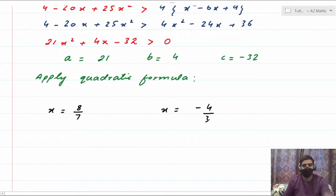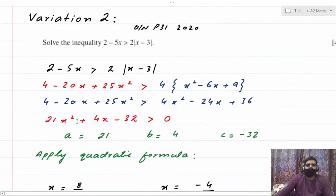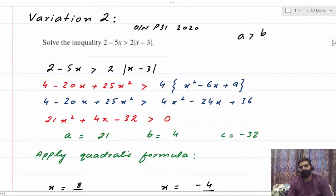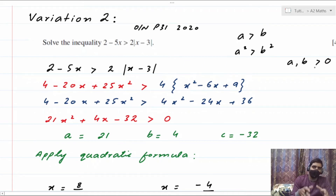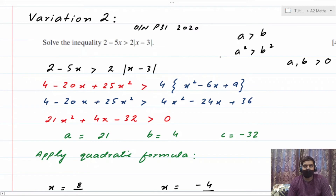The two values of x from the quadratic formula are x = 8/7 and x = −4/3. But we need to check which of these values to use — this is where the variation matters. Remember: for squaring to be valid, both sides must be positive.